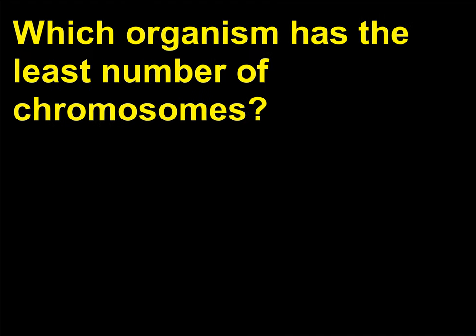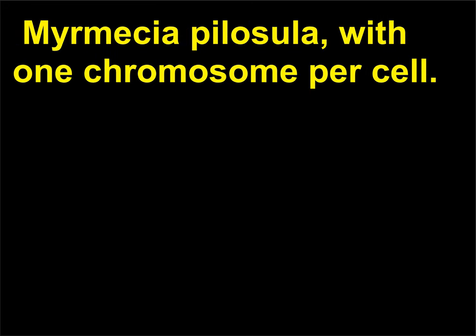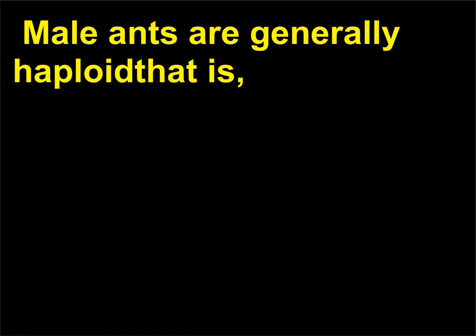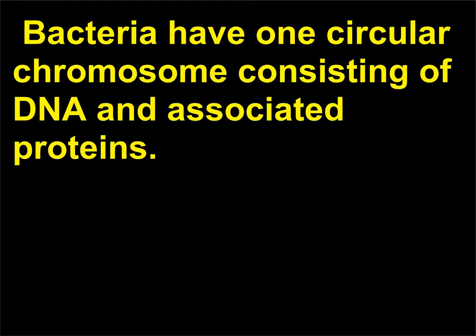Which organism has the least number of chromosomes? The organism with the least number of chromosomes is the male Australian ant, Myrmecia pilosula, with one chromosome per cell. Male ants are generally haploid — they have half the number of normal chromosomes — while the female ant has two chromosomes per cell. Bacteria have one circular chromosome consisting of DNA and associated proteins.